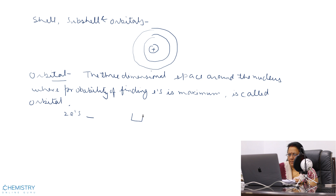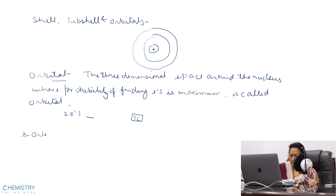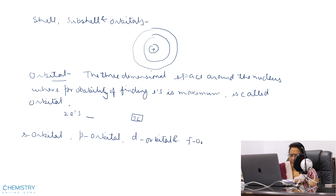An orbital can accommodate two electrons of opposite spin. There are four types of orbitals: s orbital, p orbital, d orbital and f orbital.